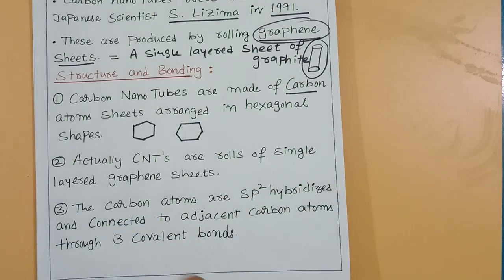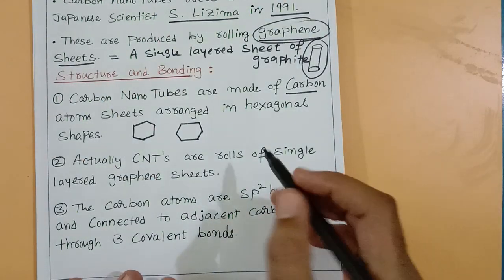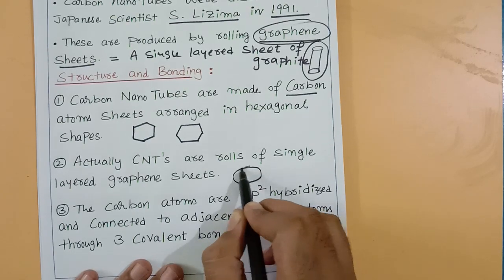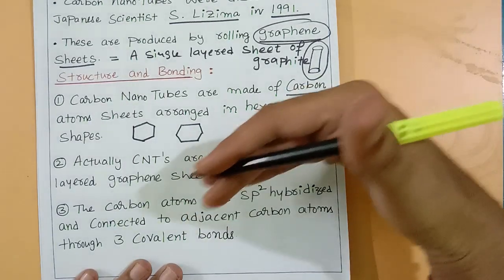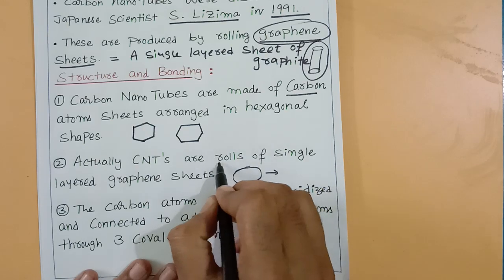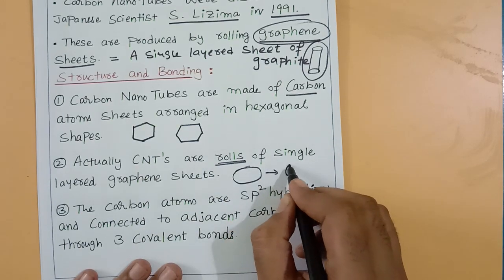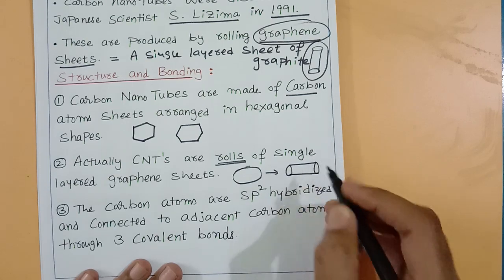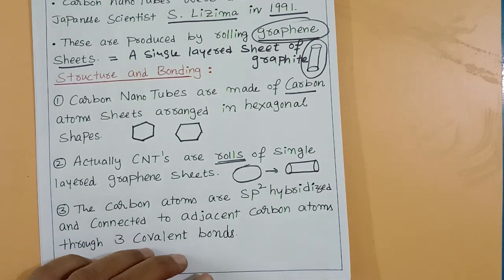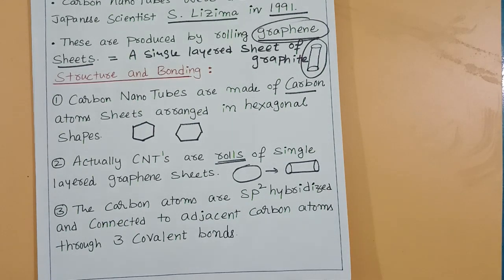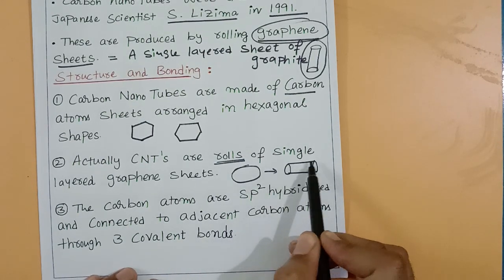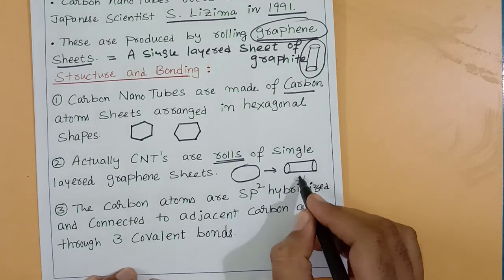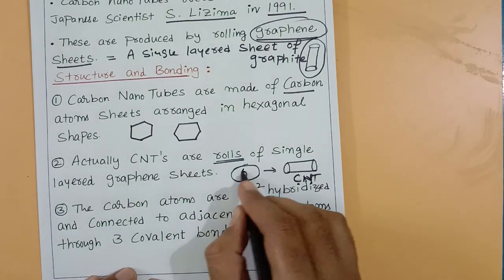Think of it like a roti — the roti is flat. If you roll the roti into a cylindrical form, you get a tube shape with empty space inside. Similarly, a graphene sheet is flat, and when rolled into a cylindrical form, the inside space is hollow. That is a graphene sheet rolled into carbon nanotubes.